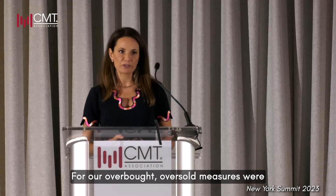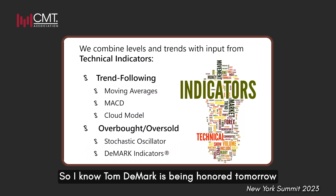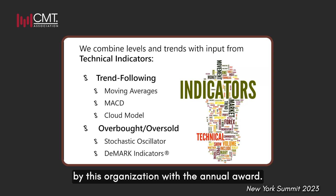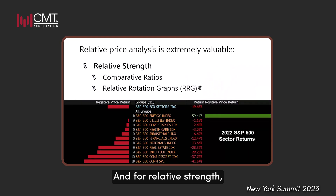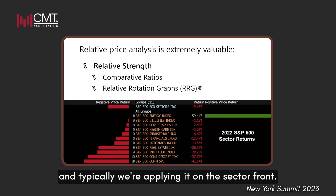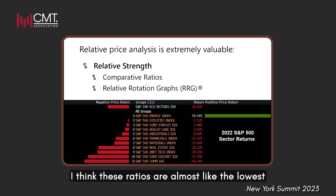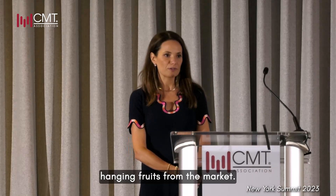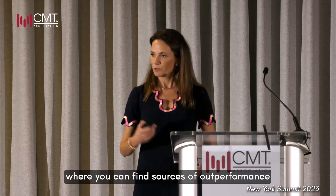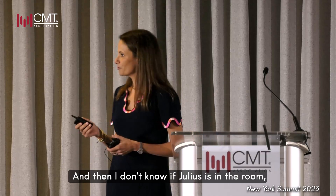For our overbought/oversold measures we're primarily using the Stochastic Oscillator and the DeMark indicator — Tom DeMark is being honored tomorrow by this organization with the annual award, very well-deserved. For relative strength, we're taking price-to-price ratios and typically applying them on the sector front. These ratios are almost like the lowest-hanging fruit in the market if you're focused on US equities — you can find sources of outperformance and underperformance and express those views through sector ETFs. And then there are Julius DeKempener's Relative Rotation Graphs, which we call RRGs.